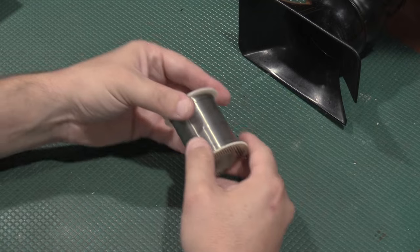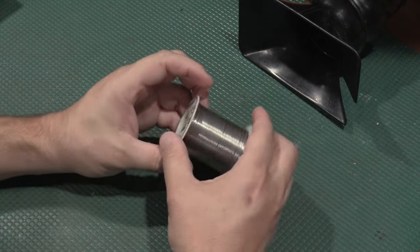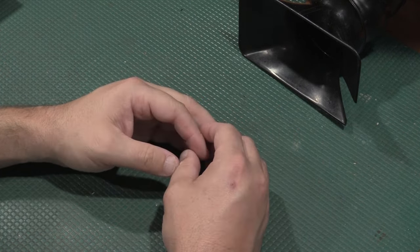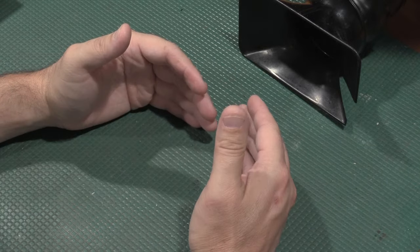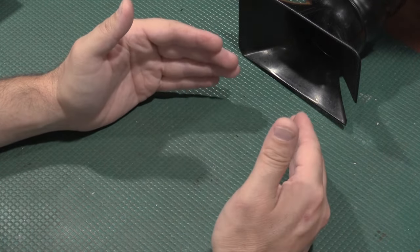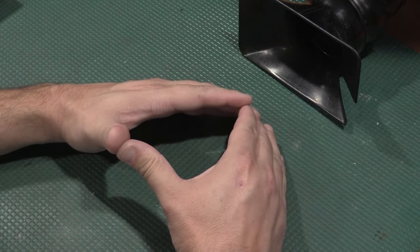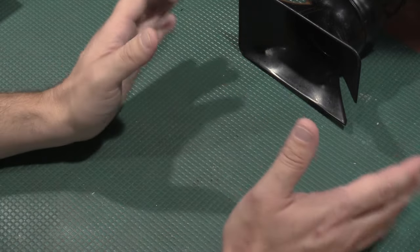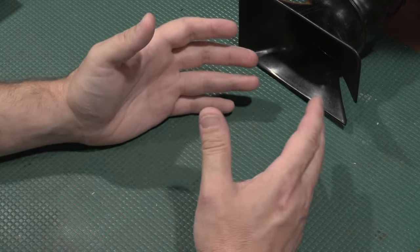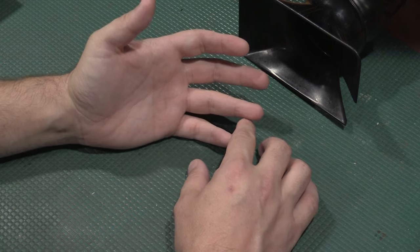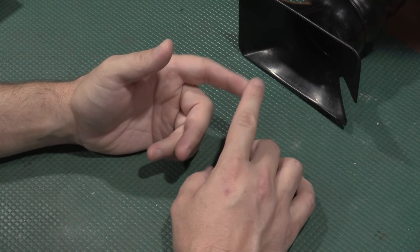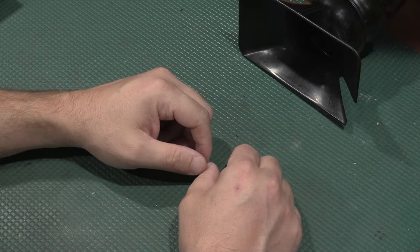The hotter the iron is, the faster the flux will burn off. Once the flux is burnt off the joint, the cleaning action of the flux is gone and it won't solder very well because the joint will start to oxidize and the solder won't stick, also known as wetting. You can tell when the solder goes because it's like start to melt, start to melt, and then it'll just jump on the joint. That's when it's gotten hot and clean enough for the act of soldering to take place.